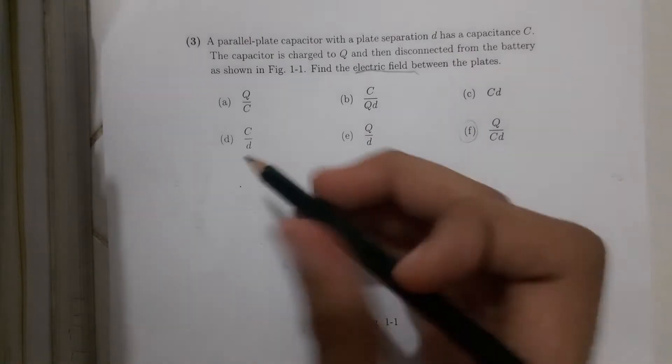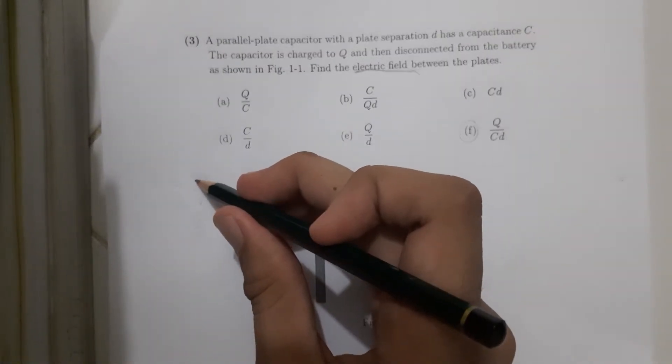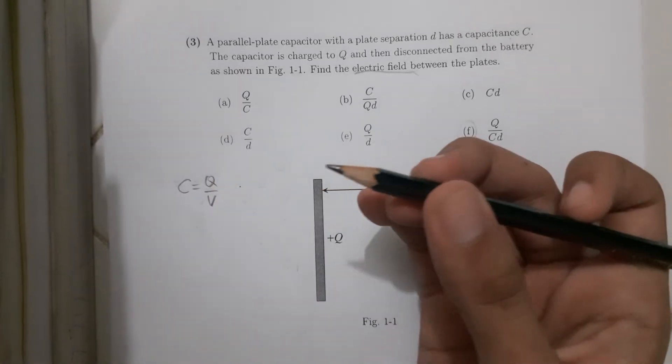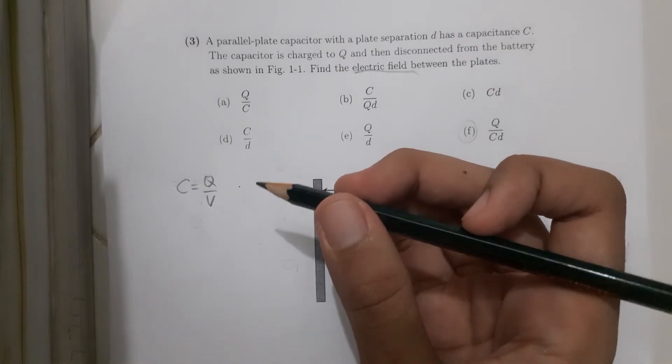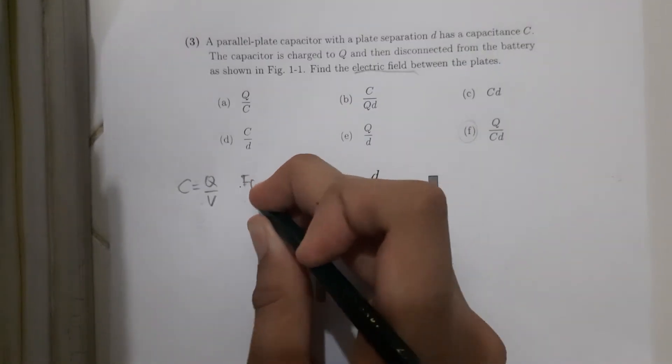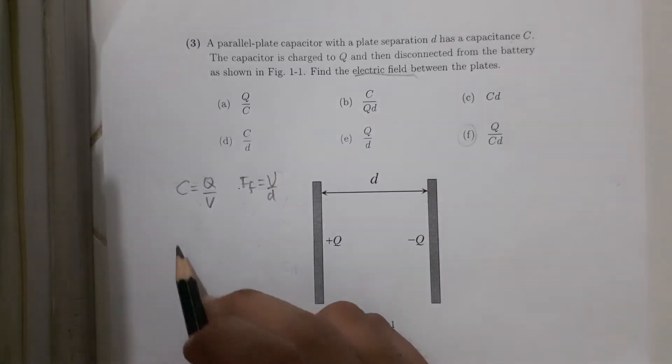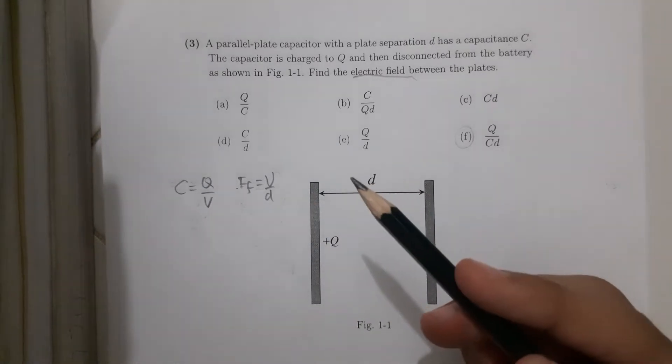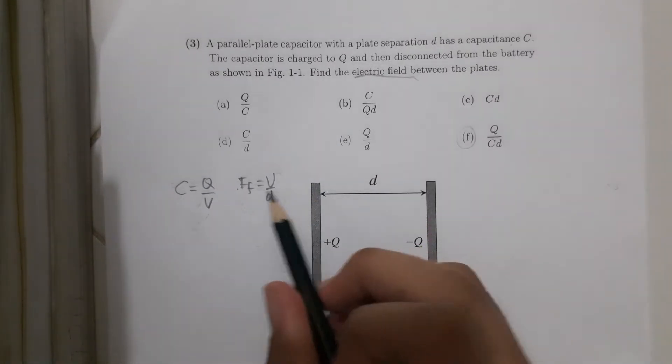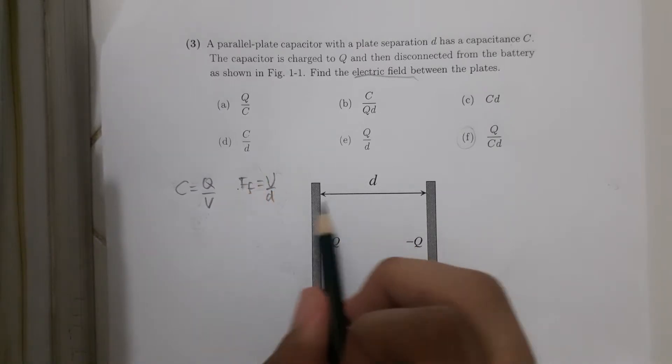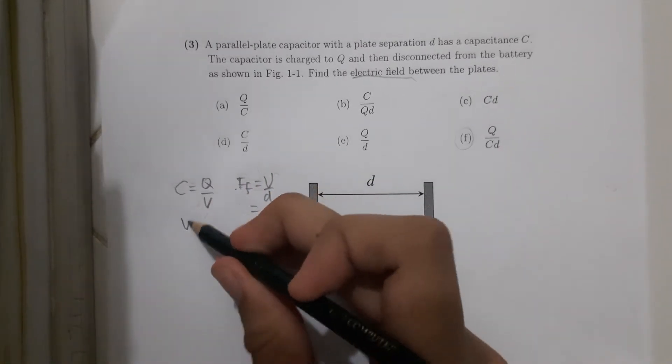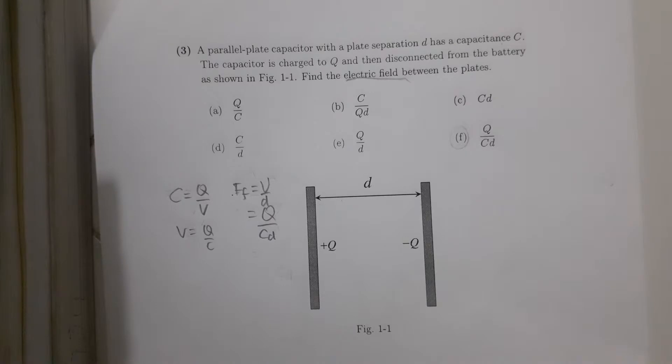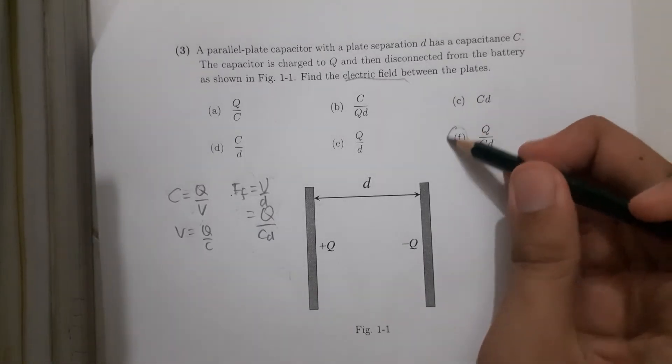So first, for parallel plate capacitor, the formula related to that capacitor is C equals Q over V. And if you are asked about electric field, the formula is V over D, which C is capacitance, Q is the charge, V is the potential difference. So if the formula of electric field is the potential difference over distance, then we can change V here, become Q over C. So it is Q over CD. So the answer is F.